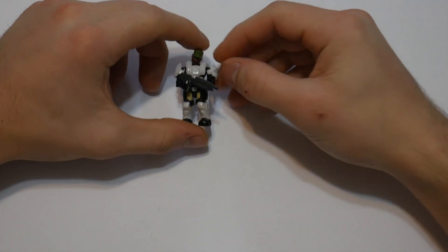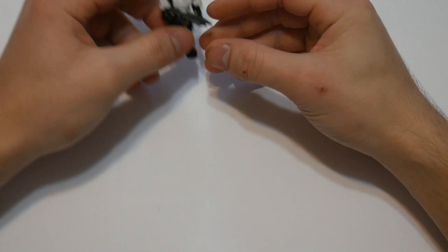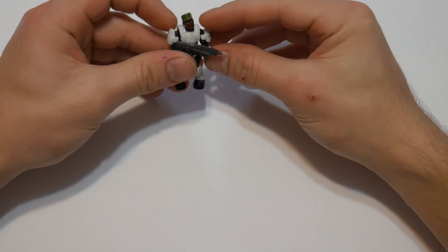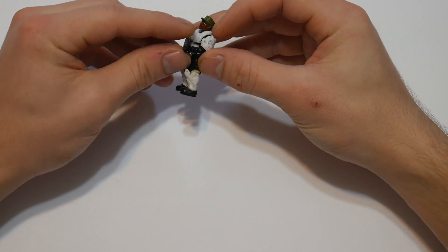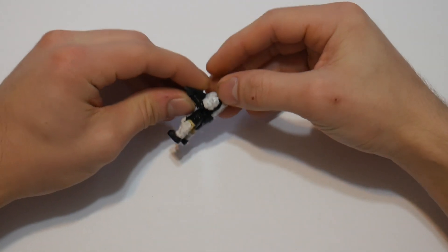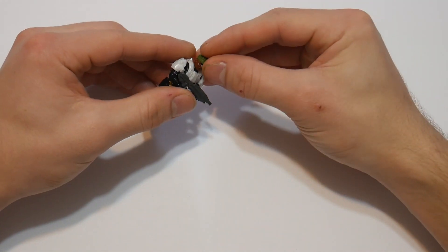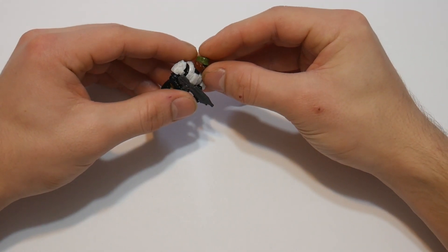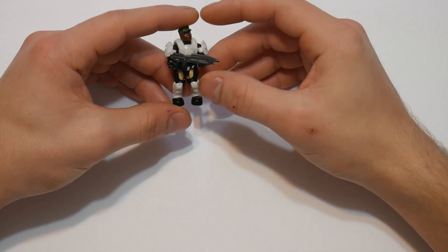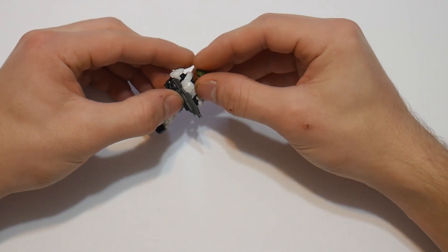Hello everyone, welcome back to another video. In today's video we have a commission and we're going to be making a Halo 3 ODST Sergeant Johnson like the one you see in the teaser trailer. I'm actually really excited to work on this figure and I love Sgt. Johnson as a character, so it's going to be fun making him an ODST.